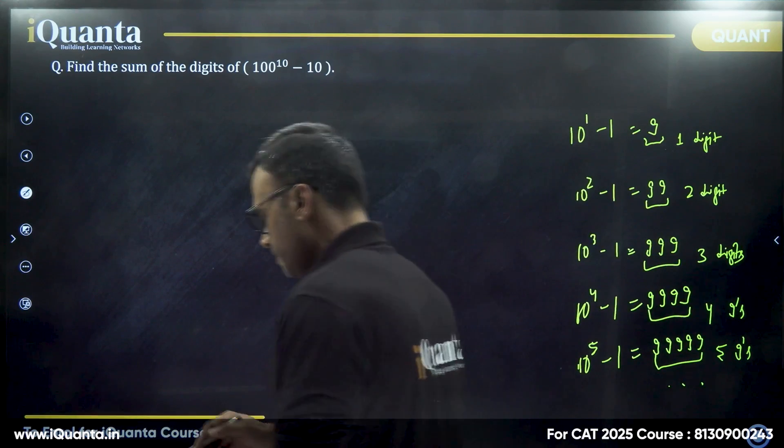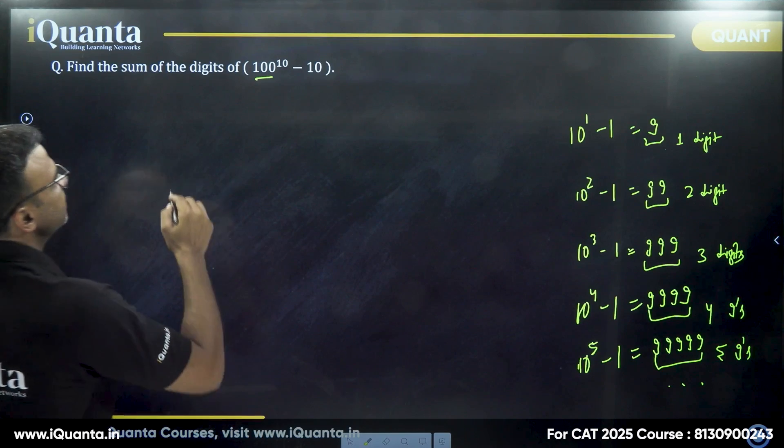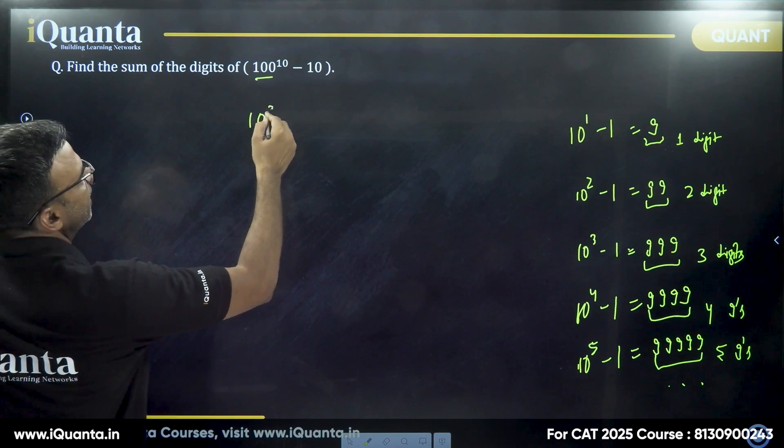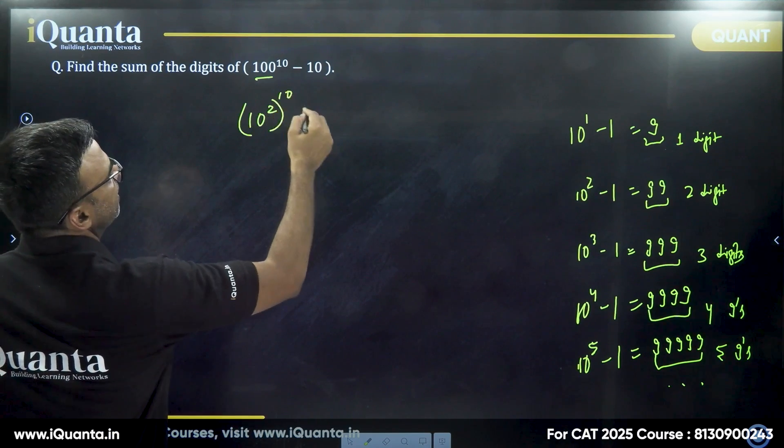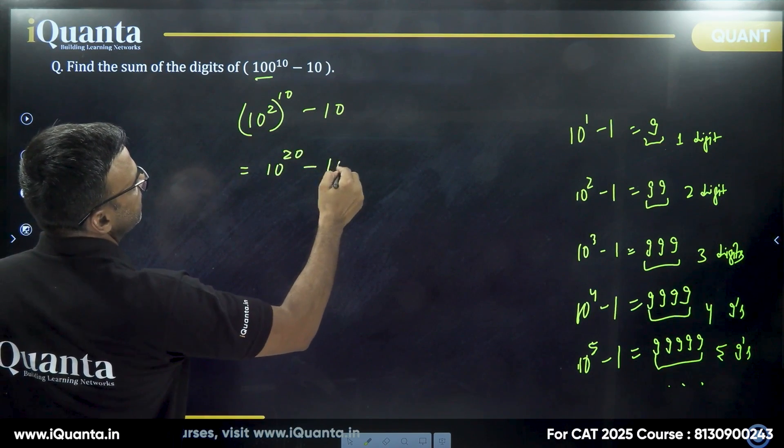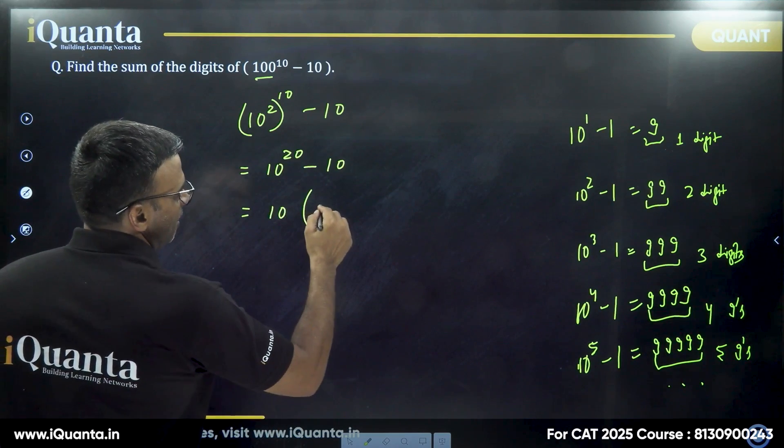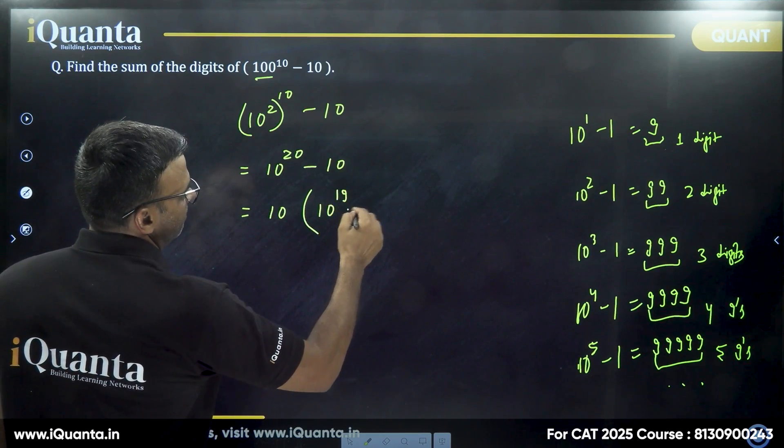How do we use this in this question? Look at it carefully. Here we have 100 to the power 10. 100 is 10 squared. So I'll write it as 10 squared to the power 10 minus 10. So it becomes 10 to the power 20 minus 10. Take 10 common. It will become 10 to the power 19 minus 1.